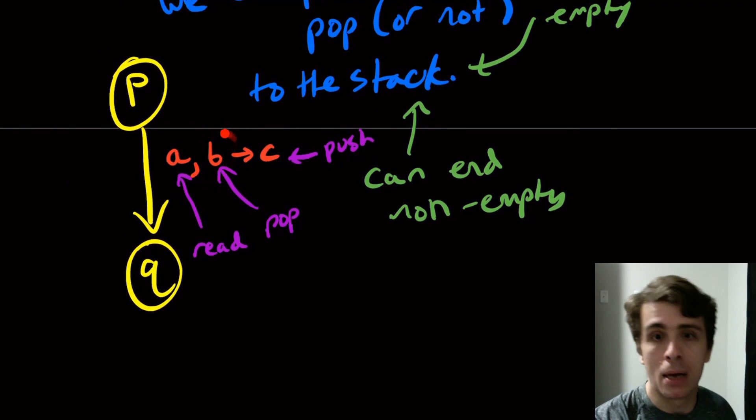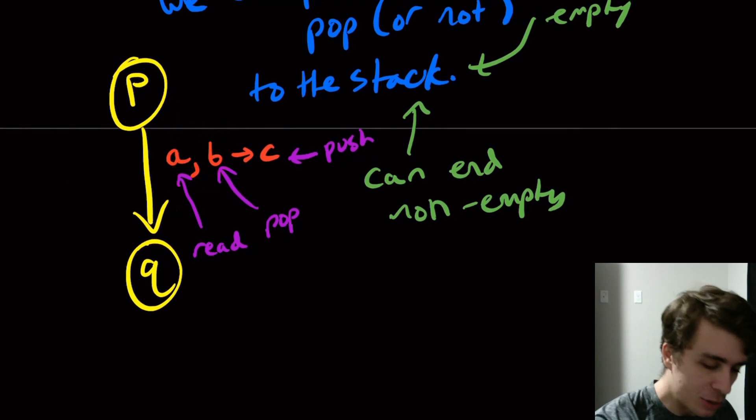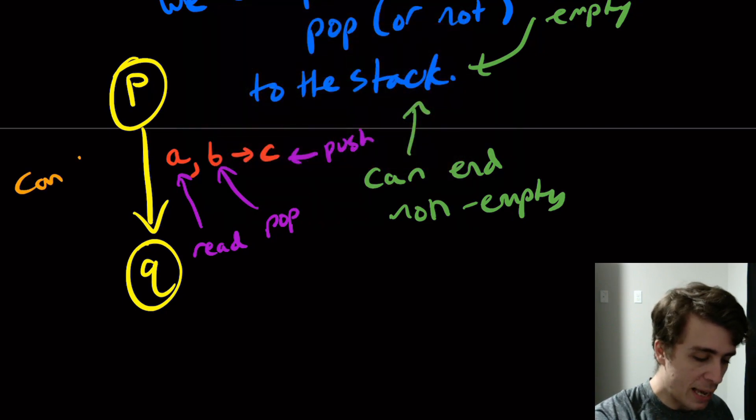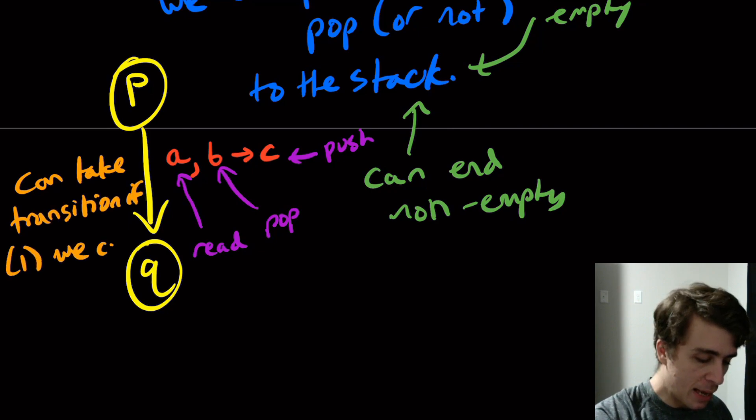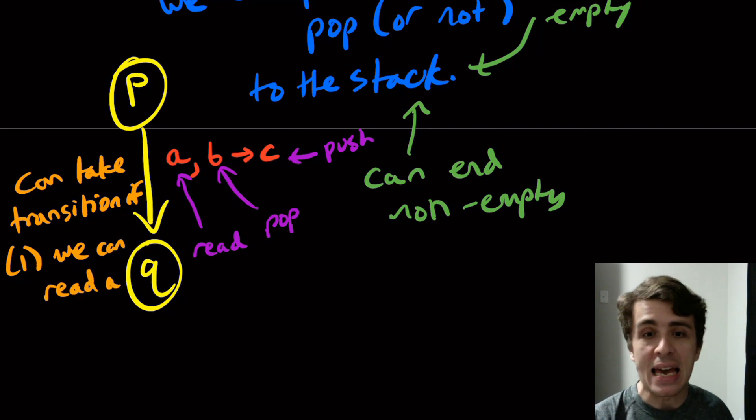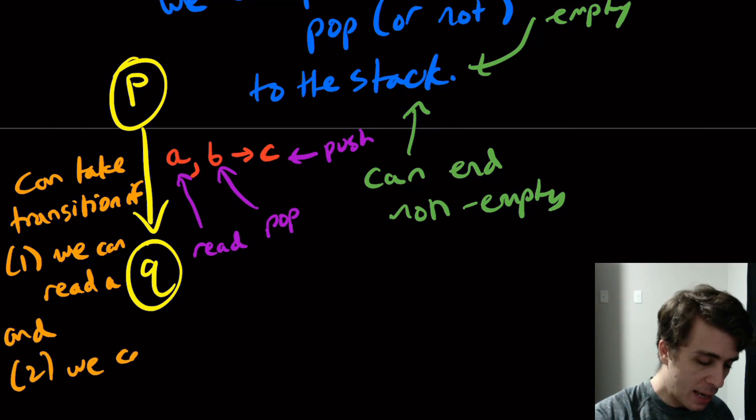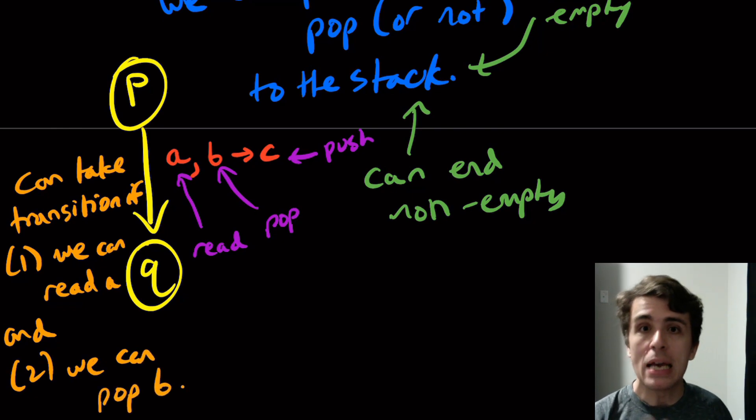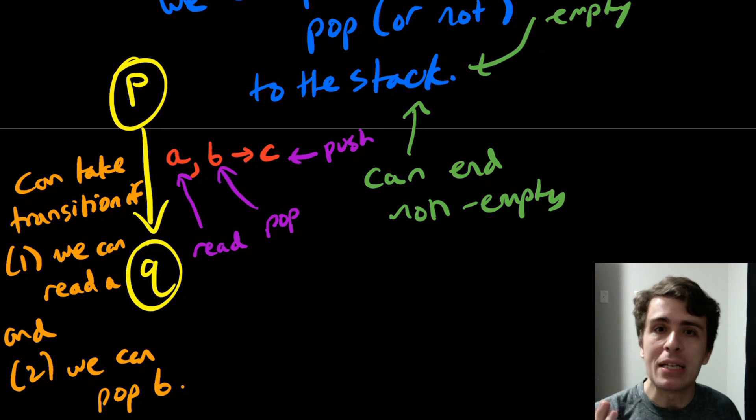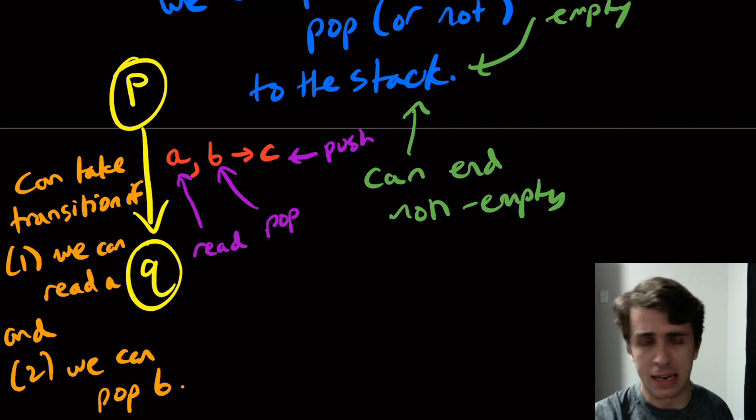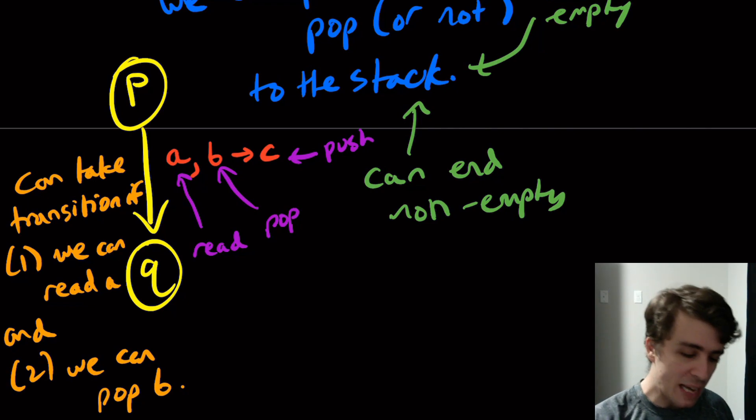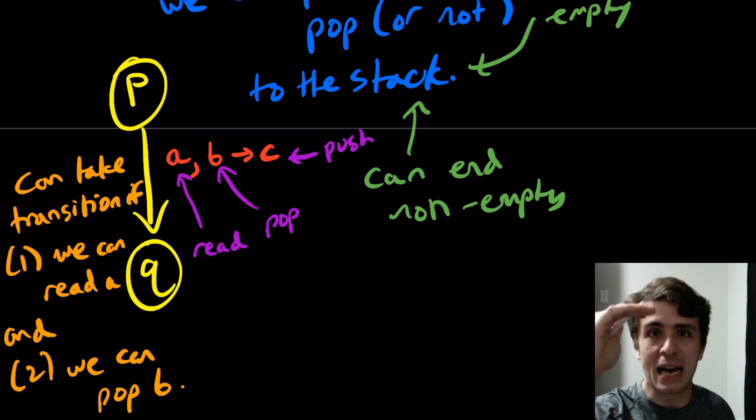So that'd be zero, or we can push one character on at a time or pop. It's important that the pop appears first. We can only take this transition—so here's something I should also note. We can take the transition, we're allowed to take it if we can read the a—and note that the a here could represent a character or empty, it doesn't have to be a character—and two, we can pop the b. So if we fail either one of those, we're not allowed to take the transition at all. And think about it: if we can't read something, we can't take the transition, just like with the NFA/DFA type model. But if we want to take this transition but we can't pop this, then that means that we're trying to pop something that's not on the top of the stack, which doesn't make sense.